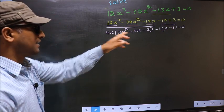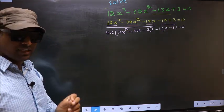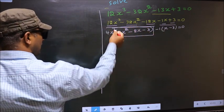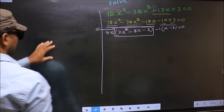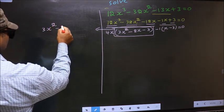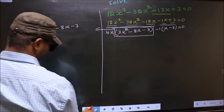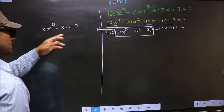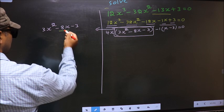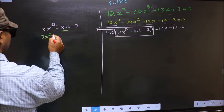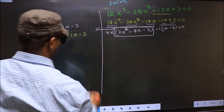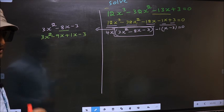In this equation, we have come across a quadratic, so I will factorize 3x squared minus 8x minus 3. To factorize this, we should split the middle term minus 8x. So in place of minus 8x, I write minus 9x plus 1x, giving 3x squared minus 9x plus 1x minus 3.